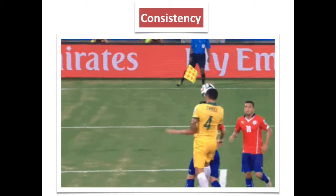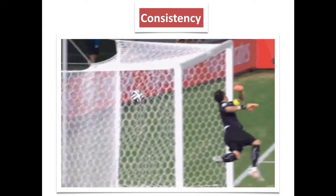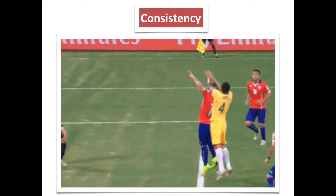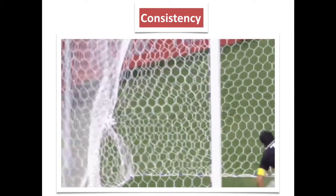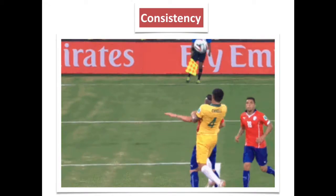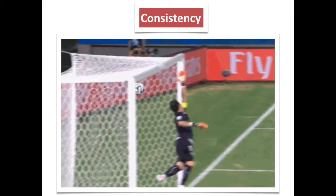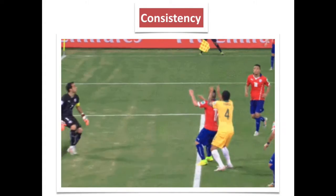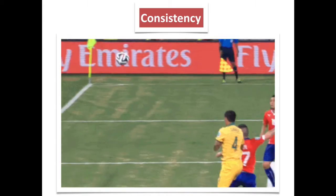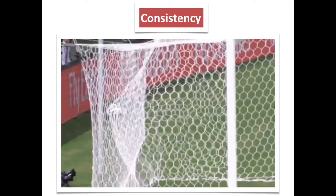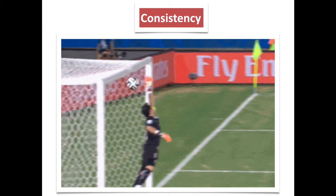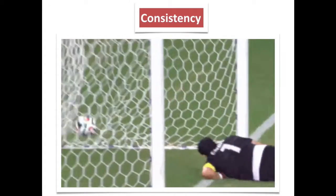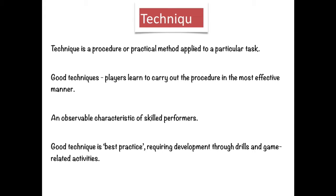Similarly, with the header into the goal, there's a high level of kinesthetic sense required to get his body into position to contact the ball correctly and put it into the net. He also shows great anticipation to get there and predict where the ball will be. This helps him to be consistent, score lots of goals, and apply an appropriate technique — which leads us to the next characteristic.